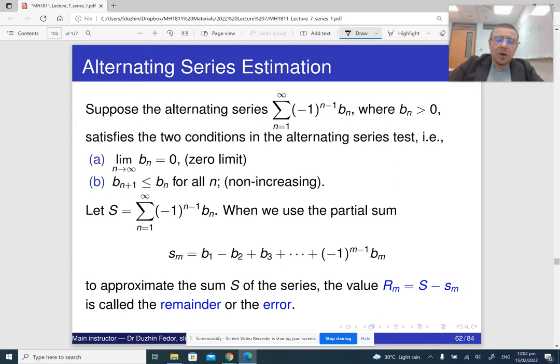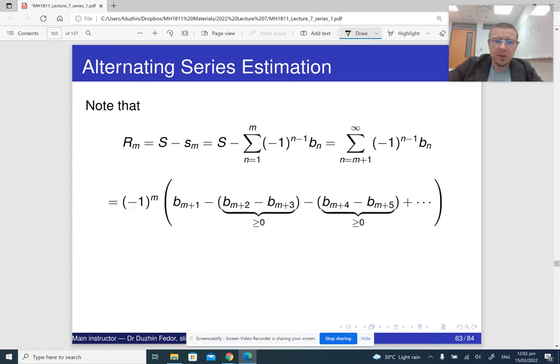So what if instead of the sum of the series, which is S, we take its partial sum s_m? How good is it an approximation? The difference between the actual value of the infinite series and this partial sum is called the error of approximation. And the idea is, how can we estimate the error?